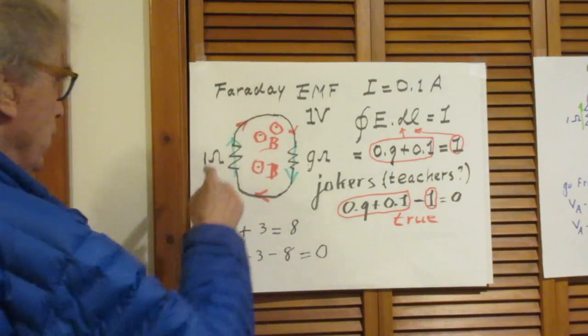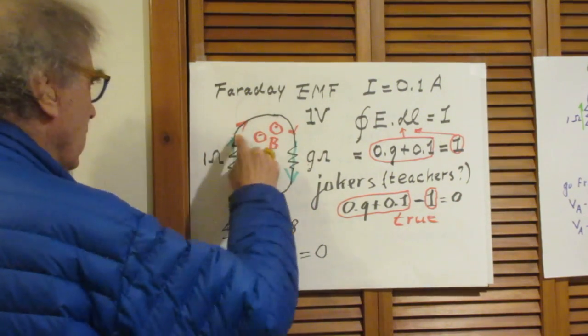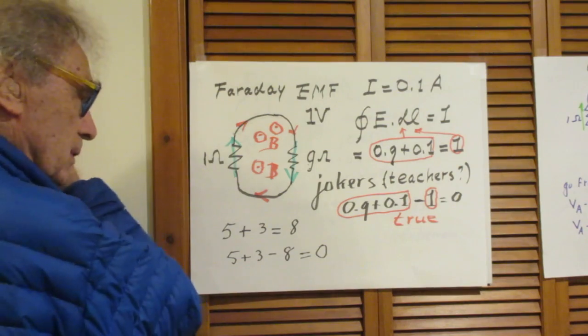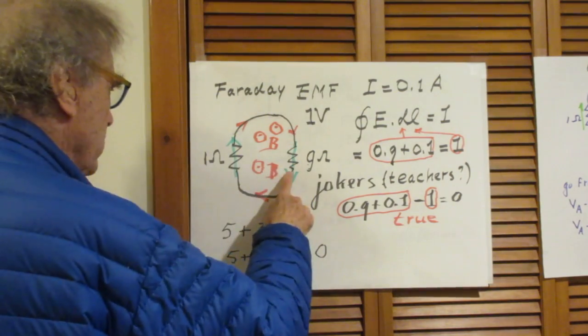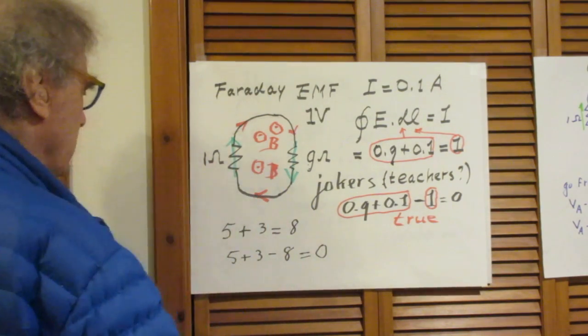We have here a circuit, copper wire, near zero resistance. But there is a 9 ohm resistor here and there is a 1 ohm resistor there.